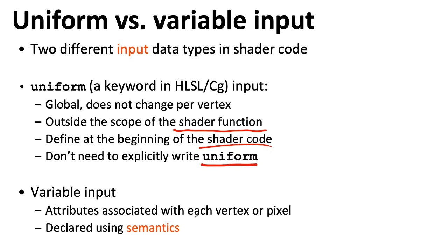There's another kind of input: the big buffers of vertices being sent from main memory into the GPU, as well as things like locations and colors of pixels being created by your interpolator. These are defined using something called semantics, which are unique to HLSL/CG — you don't see these in standard C, C++, or C#. These are tied to specific pieces of hardware on the GPU; they're not generic.